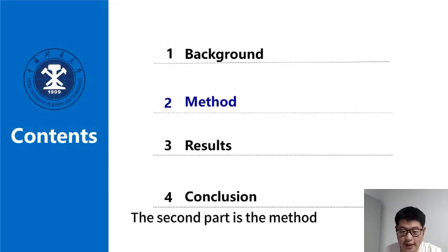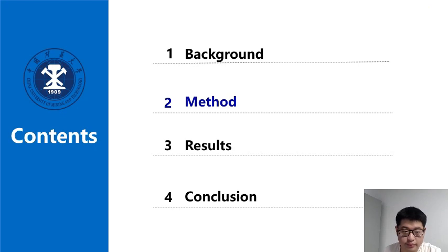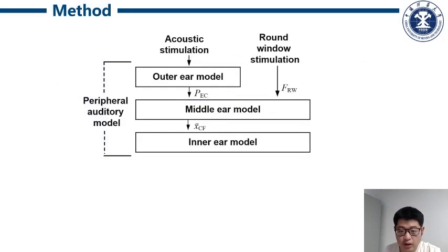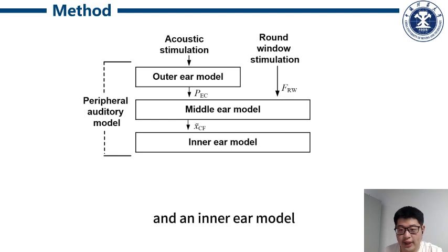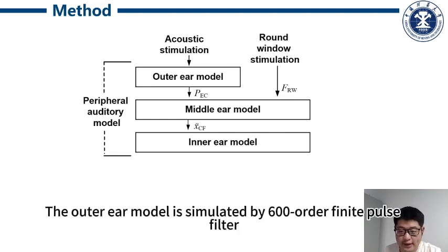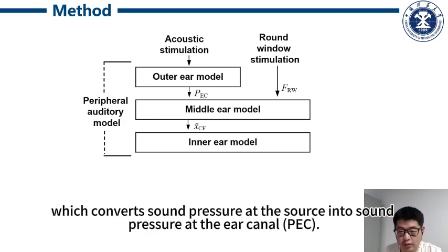The second part is the method. The computational model of the auditory periphery consists of an outer ear model, a middle ear model, and an inner ear model. The outer ear model is simulated by a sixth-order finite impulse response filter, which converts the sound pressure at the source into sound pressure at the eardrum.